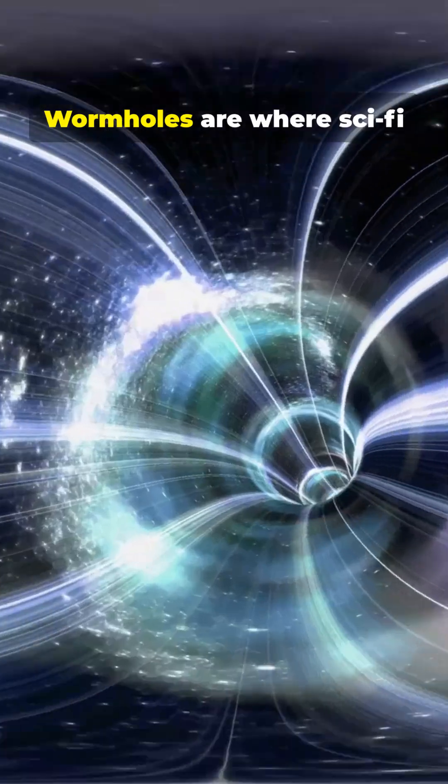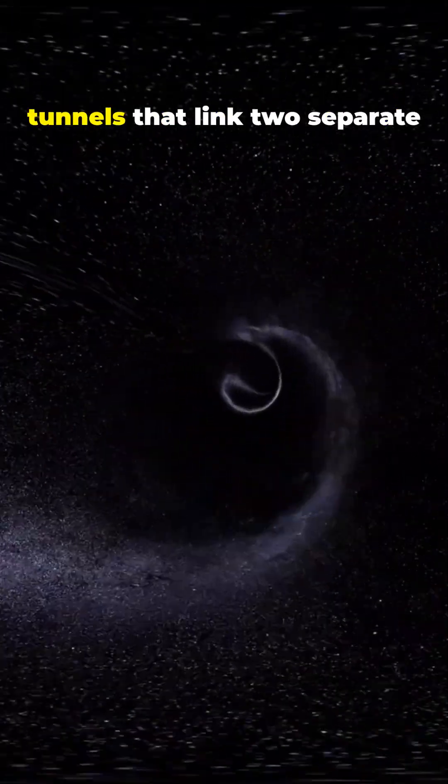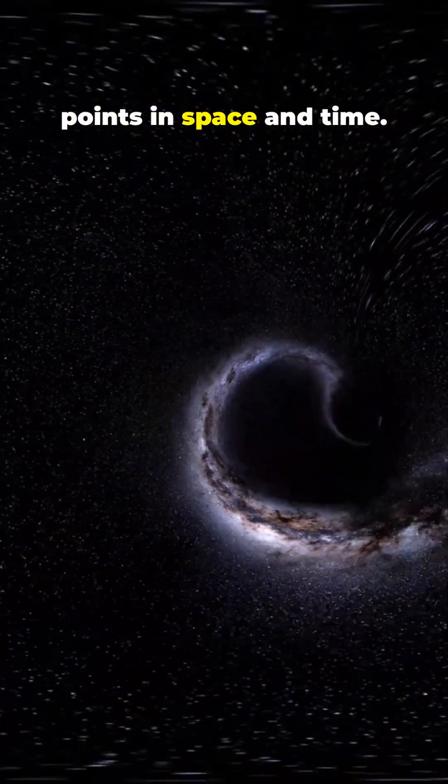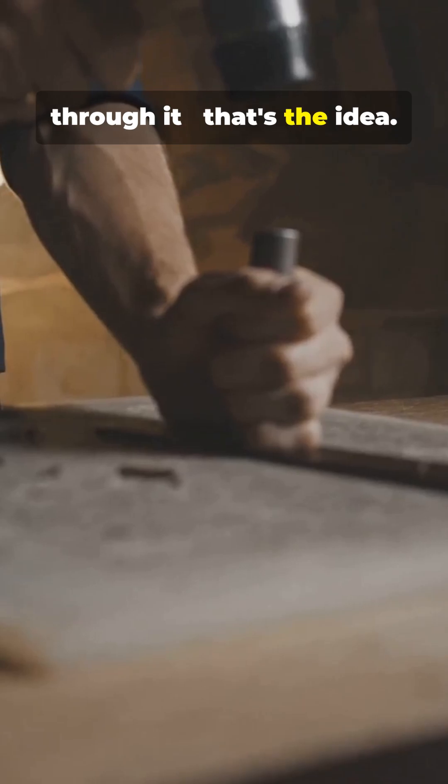Want to cheat distance in the universe? Wormholes are where sci-fi meets serious physics. They're theoretical tunnels that link two separate points in space and time. Imagine folding a sheet of paper and poking a hole through it—that's the idea.